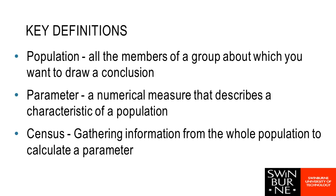The next term is parameter. A parameter is a numerical measure that describes a characteristic of our population — two very common ones are percentages and means, but specifically these are a percentage or mean for the whole population. Normally we can't gather data for an entire population, so we won't actually be able to make these calculations directly — for example, working out the percentage of people in a particular ethnic group or the average income is very difficult outside of using a census.